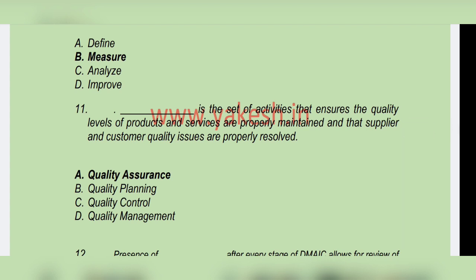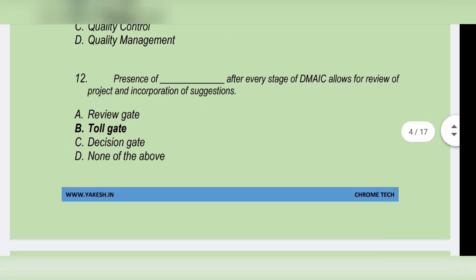Dash is a set of activities that ensure the quality levels of products and services are properly maintained and the supplier and customer quality issues are properly resolved. Option A: Quality assurance is the correct answer. Presence of — after every stage of DMAIC allows for review of the project and incorporation of suggestions. Option B: Stroll gate.